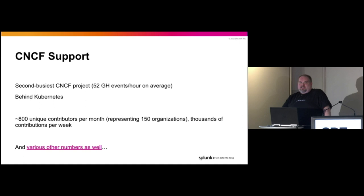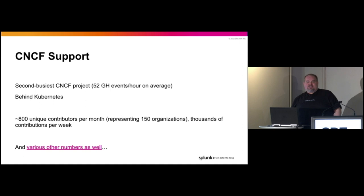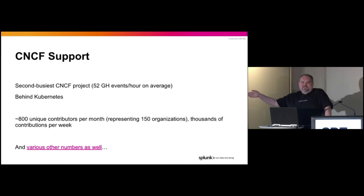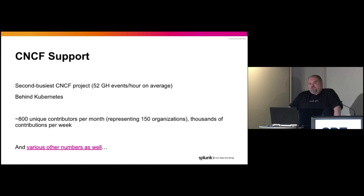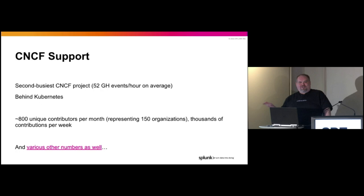OpenTelemetry is the second busiest Cloud Native Computing Foundation project — we have 52 GitHub events per hour on average. It's behind this little hobby project called Kubernetes, but one day we'll overtake them. OpenTelemetry has about 800 unique contributors per month representing 150 organizations, thousands of contributions a week. On the slides there's a link to the CNCF DevStats portal where you can get any sort of slice and dice about who's contributed. There is sort of a theory that OpenTelemetry is a Splunk project because we employ one of the co-founders and a lot of contributions come from Splunk, but it is definitely not a Splunk project — it is a community project with a governance board, open PRs, truly open.